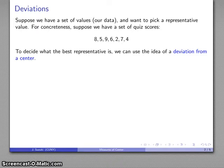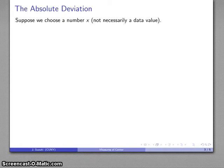How can we decide what a good representative is? To introduce that, we want to consider this idea of a deviation from a center. Whatever I think of as the center, I might want to look at how much the data values deviate from that center. The most obvious way of doing that is to use something called the absolute deviation.